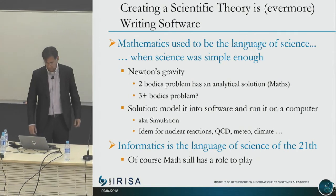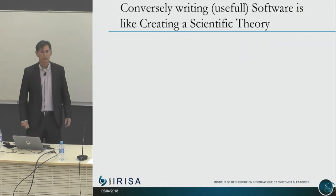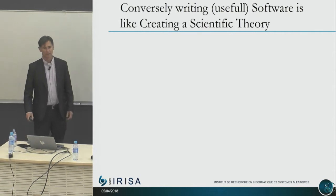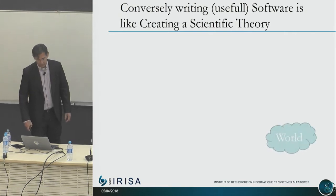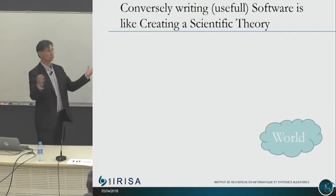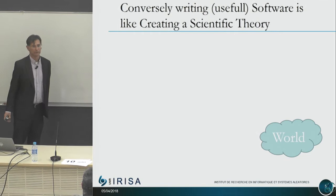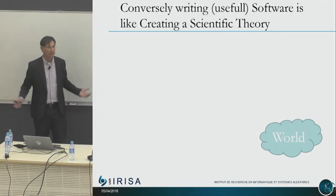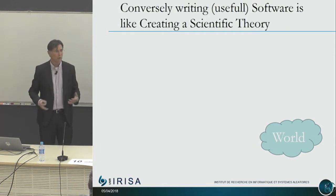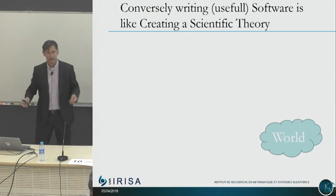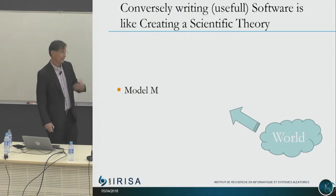Creating scientific theories nowadays is writing software. And conversely, writing useful software is like creating a scientific theory. When you have to build software to fit some purpose or requirement, you start with a problem in the real world, understand the rules and laws, and build a model of that — just like in science.